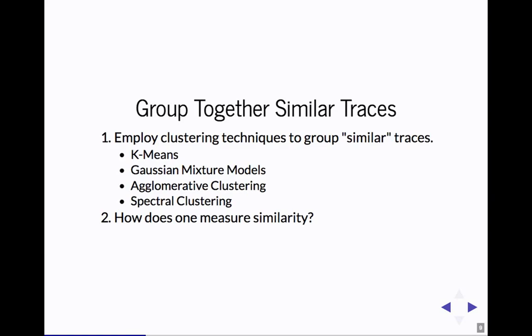Traditional ways to kind of group together traces, you'll define some feature or some distance metric, and then you'll employ standard clustering algorithms like k-means, Gaussian mixture models, agglomerative clustering, spectral clustering. But, crucially, you have to define how to measure similarity between traces.